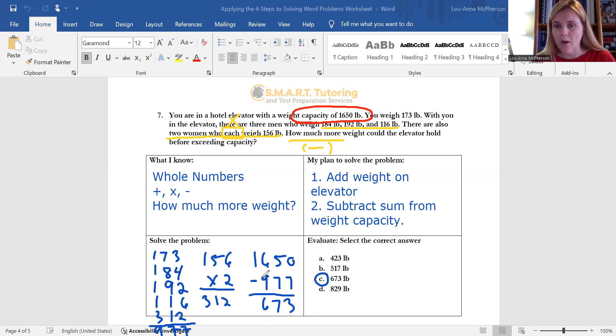And then lastly, you're going to move on to step four, which is to evaluate or select the correct answer. In this case, C, 673 pounds, is the correct answer.